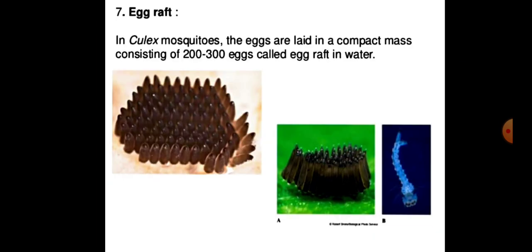The next type is the egg raft. In Culex mosquitoes, the eggs are laid in a compact mass of 200 to 300 eggs called the egg raft, deposited in water.